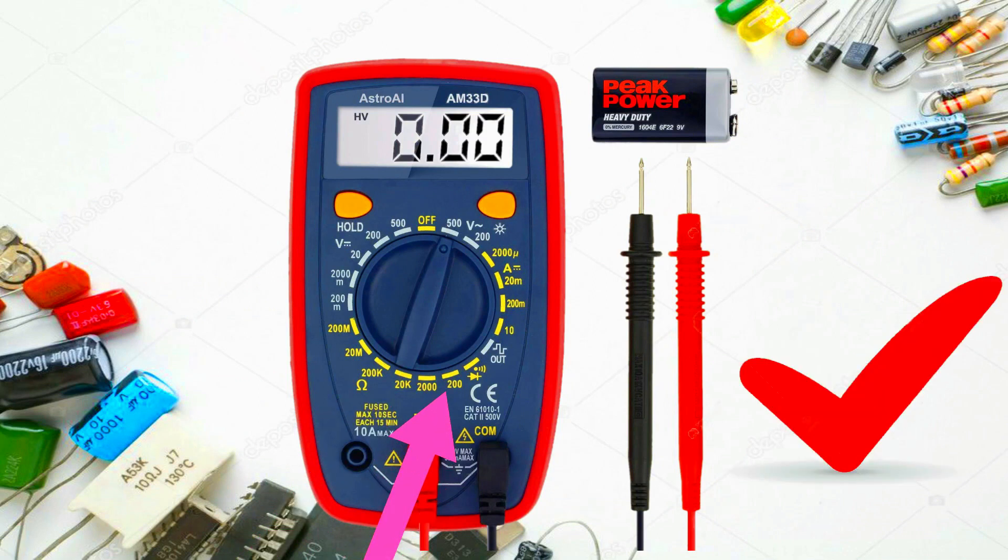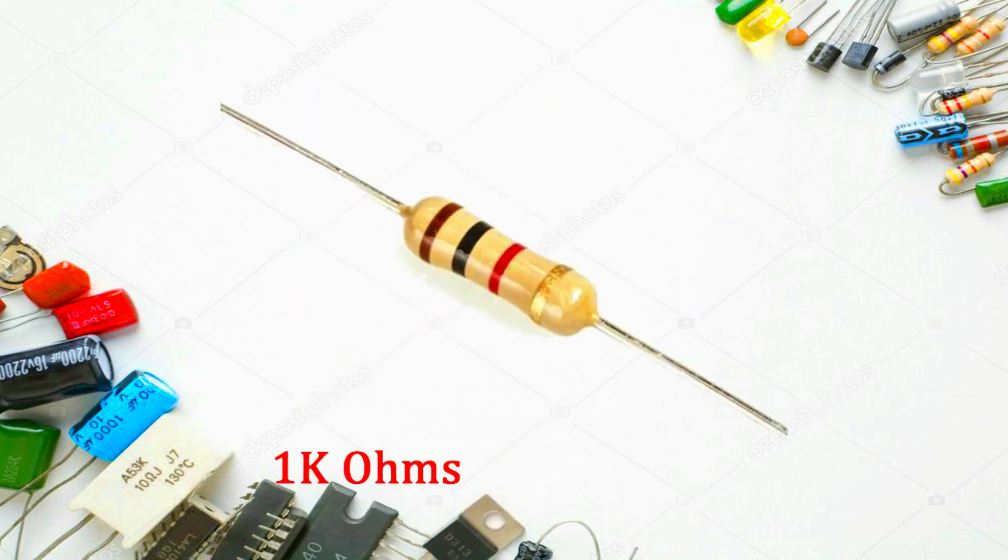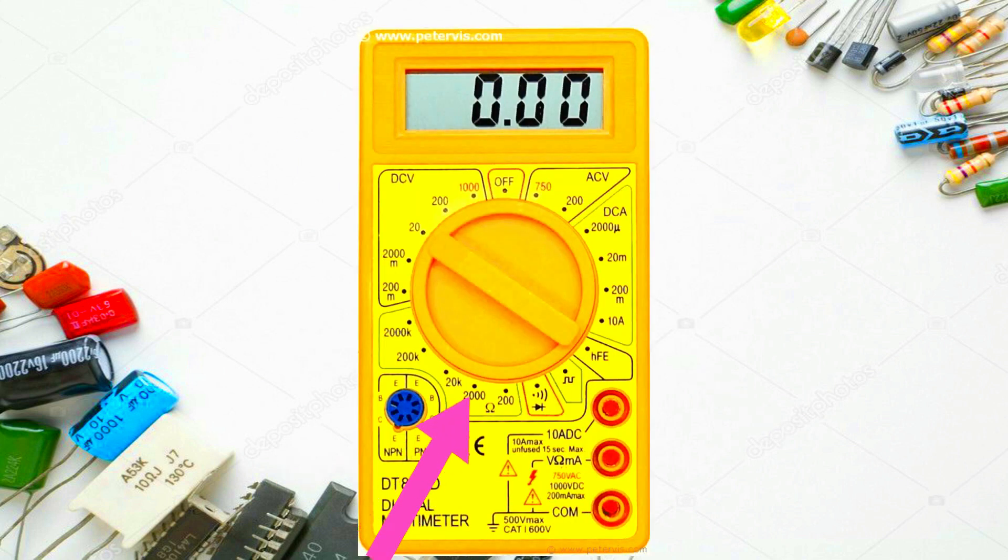If the resistor is more than 200 ohms, you should set your multimeter to 1,000 kilo ohms. Some multimeters don't have 1,000 kilo ohms written on them. If so, then set it to 2,000 kilo ohms.